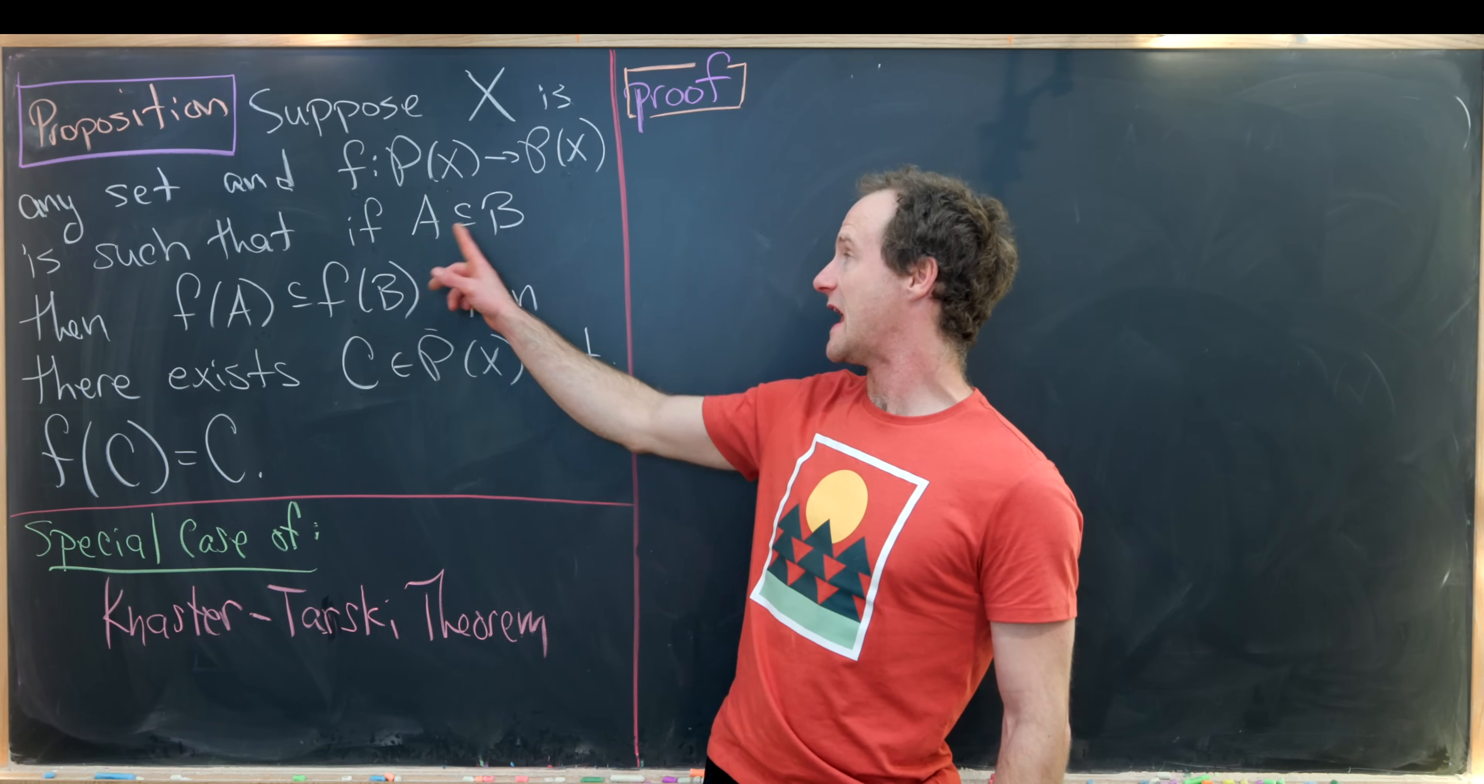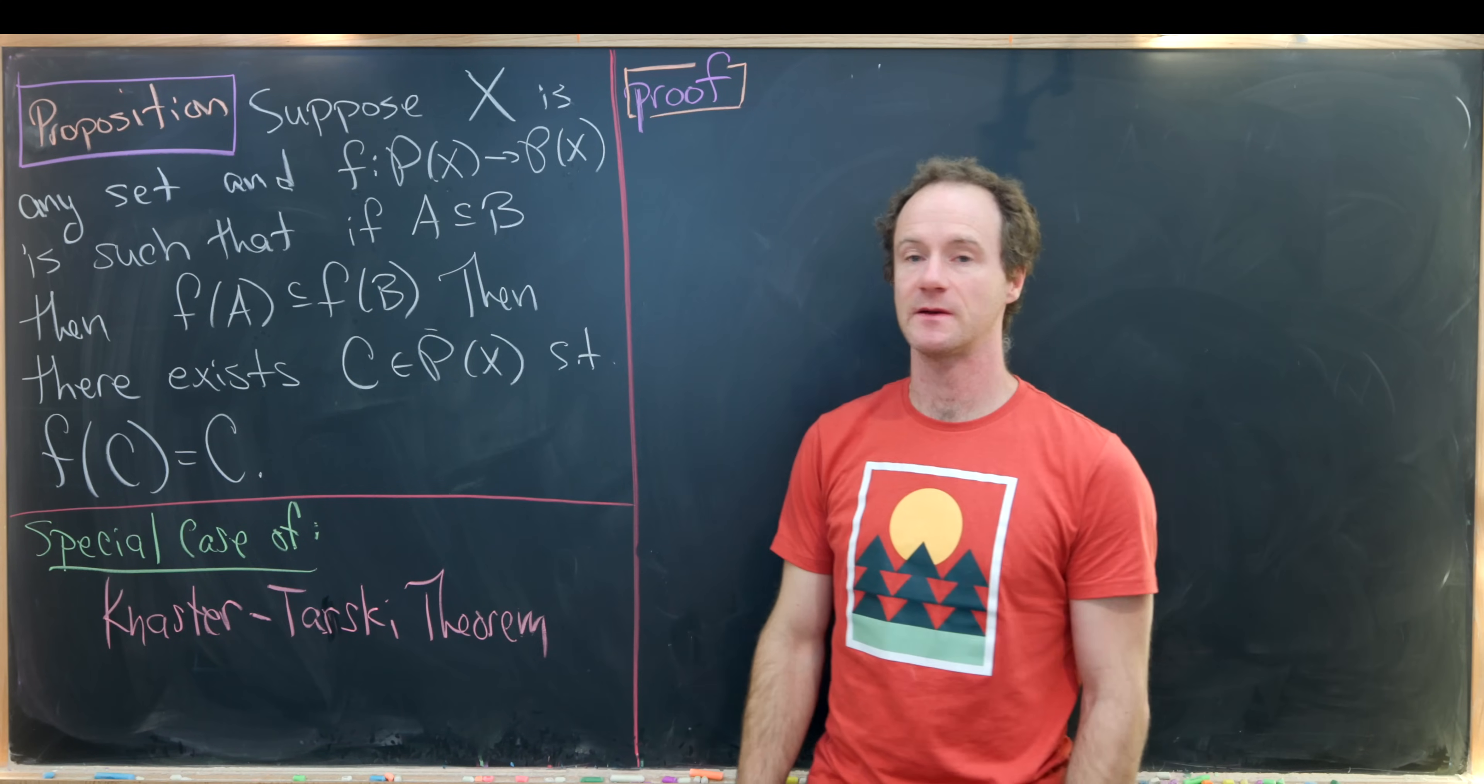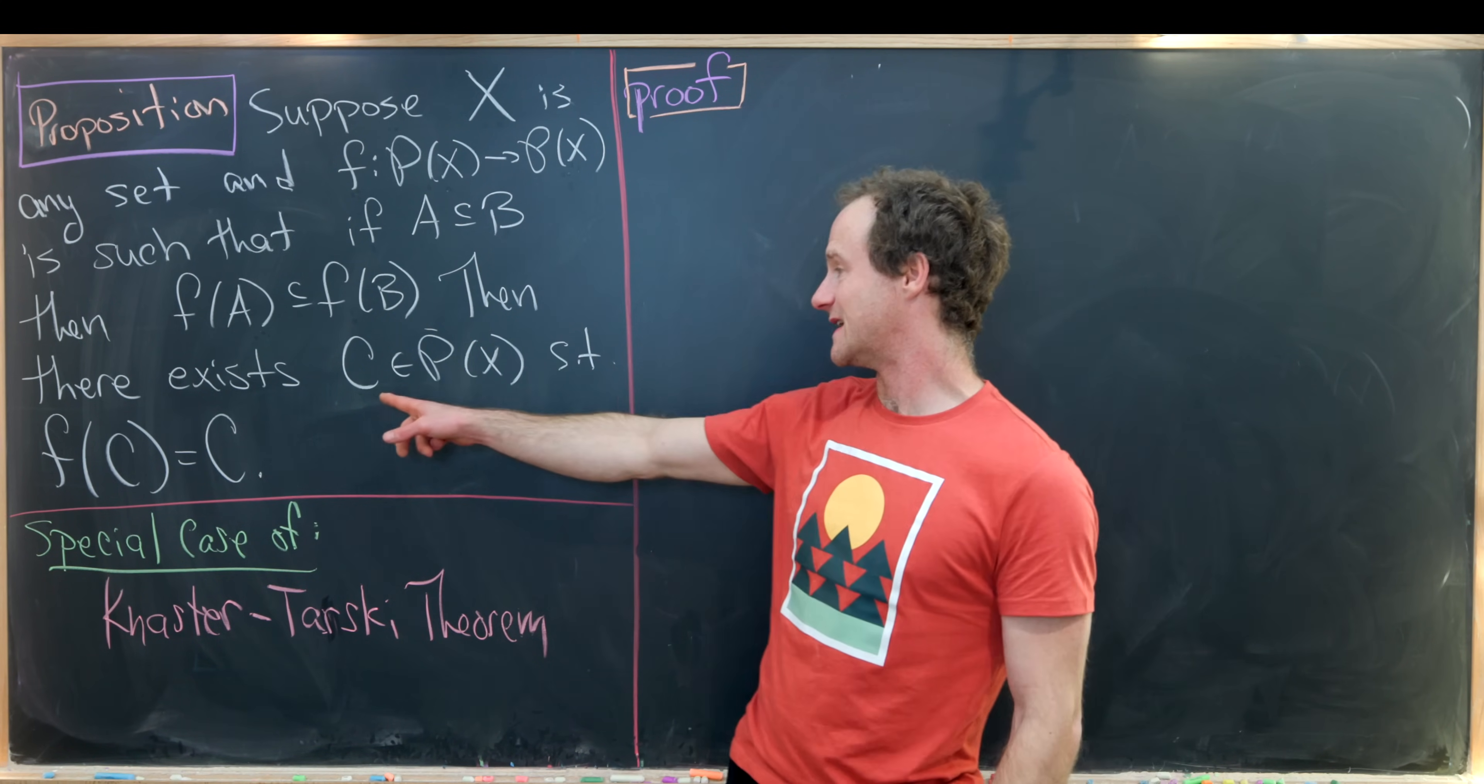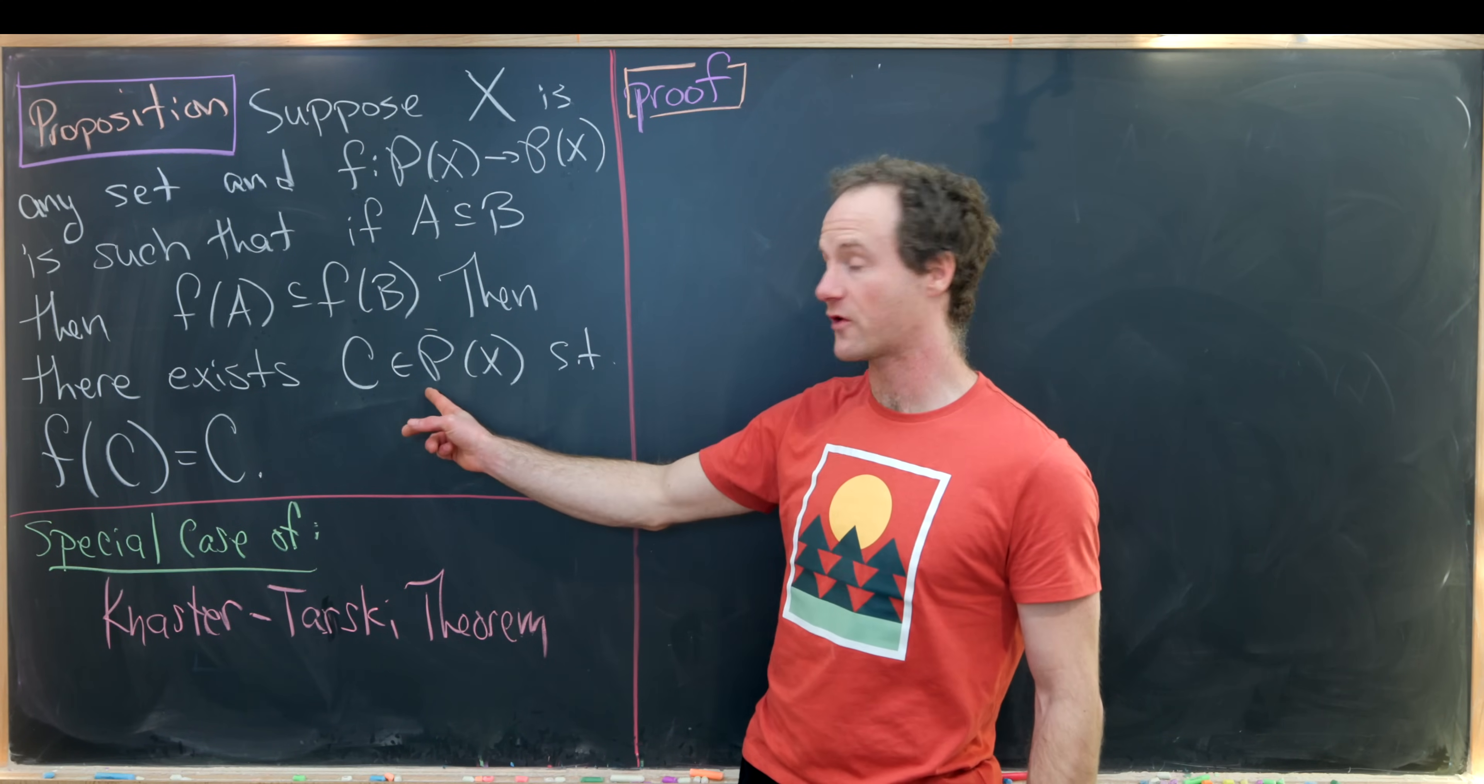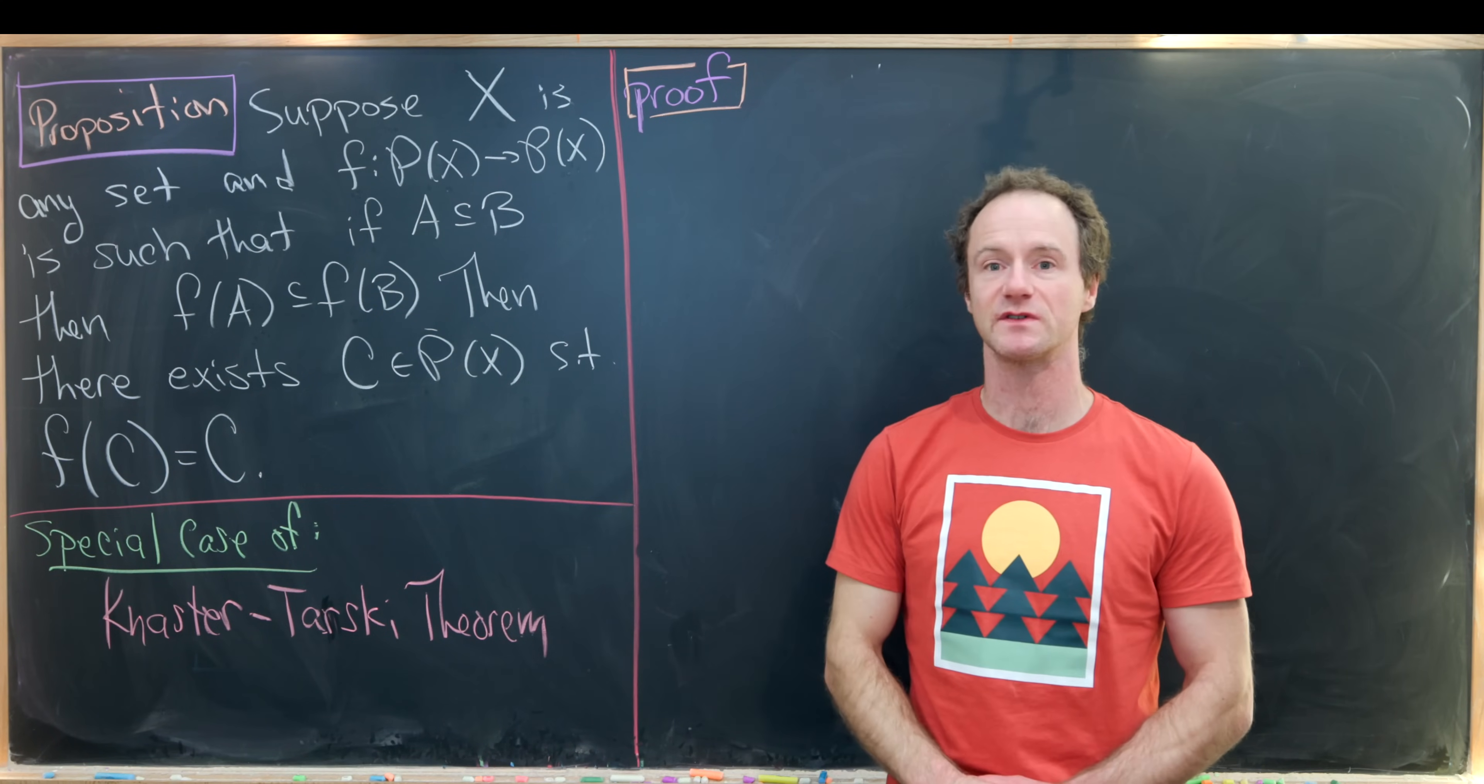So if a is a subset of b then f of a is a subset of f of b, and given these conditions there must exist a set c which is a subset of x, in other words it's in the power set of x, such that f of c equals c.